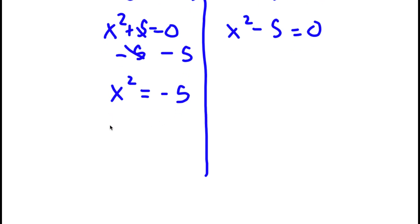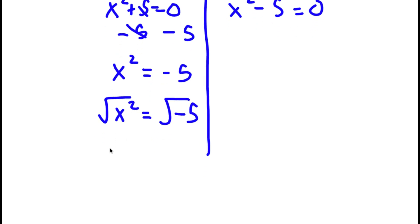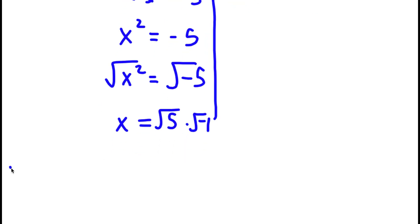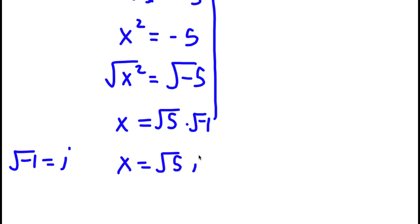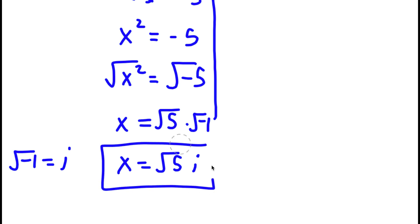Now I'm going to take the square root on both sides. The square root of x squared is x, and the square root of negative 5 is the square root of 5 times the square root of negative 1. The square root of negative 1 is equal to the imaginary number i. So if I replace the square root of negative 1 with i, I get x is equal to positive or negative the square root of 5 times i. So these are two solutions.